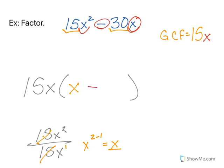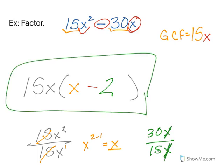So the minus sign is going to go ahead and come down. And then I'm going to take 30x divided by my GCF of 15x. 30 divided by 15 is 2. And x over x cancels out. And I am left with 15x times the quantity x minus 2.